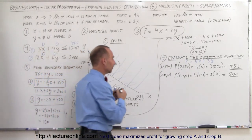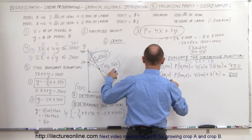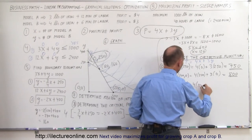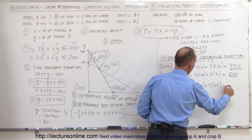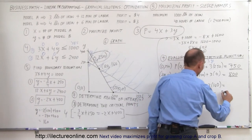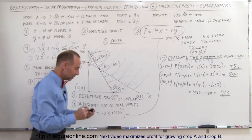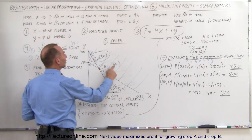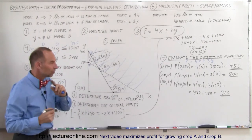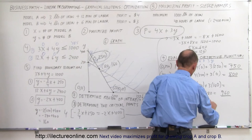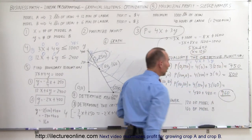But what about the third point? The condition is X equals 120 and Y equals 160. The profit at (120, 160) equals 4 times 120 plus 3 times 160, which equals 480 plus 480, equaling $960. That is definitely the better option. If I produce 120 of model A and 160 of model B, I will make $960 of profit, which is the maximum profit.